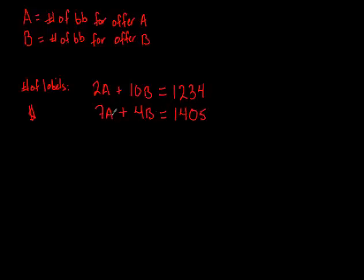So again, 7A means the number of basketballs that they need for every $7 that was sent in under offer A. 4B is the number of basketballs that they need to send out for all of the people who sent in $4 under offer B.